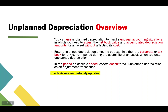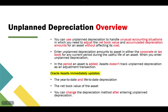Once you complete unplanned depreciation, Oracle Assets immediately updates the year-to-date and life-to-date depreciation and the net book value of the asset. You can also change the depreciation method after entering unplanned depreciation. Unplanned depreciation is used to adjust the accumulated depreciation value — you can put it in two ways: either increase or decrease, using either a positive or negative sign.